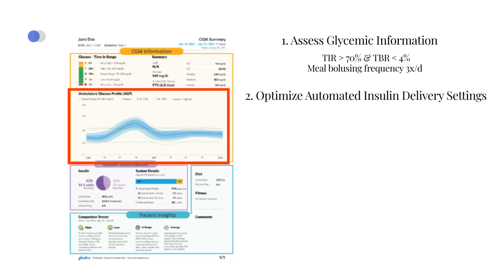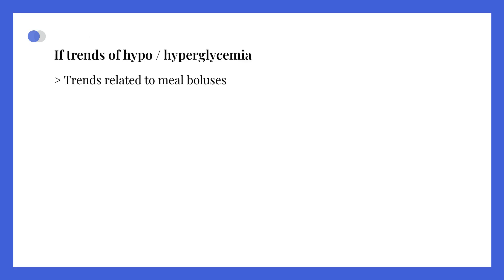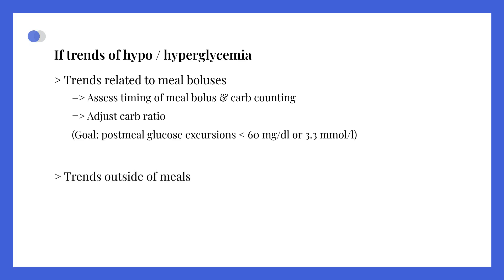Step 2: Analyze the AGP profile to identify trends of hypo or hyperglycemia, and check if they are related to meal boluses on the daily or weekly reports. If these trends are related to meal boluses, assess factors such as timing and carbohydrate counting, and consider adjusting the carbohydrate ratio. For trends outside of meals, adjustments to the target or basal insulin rates may be necessary based on the automated insulin delivery system.